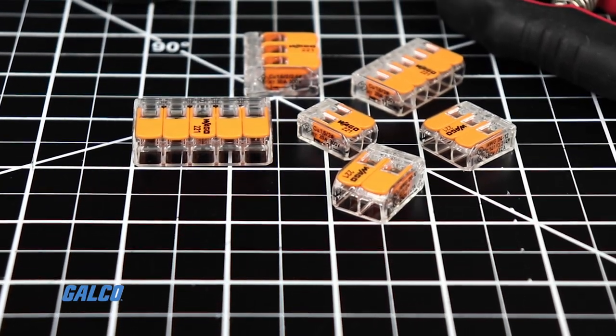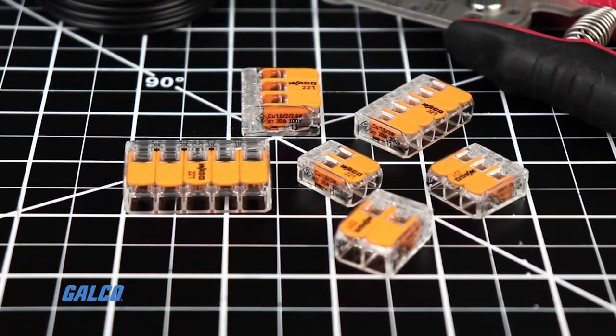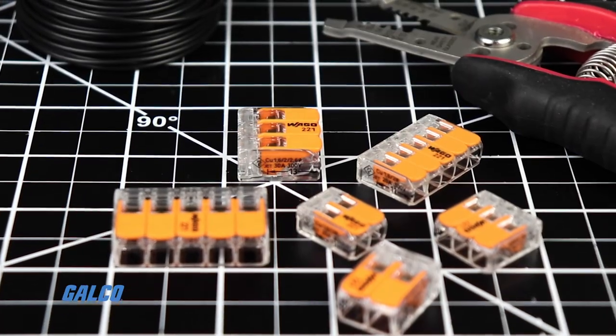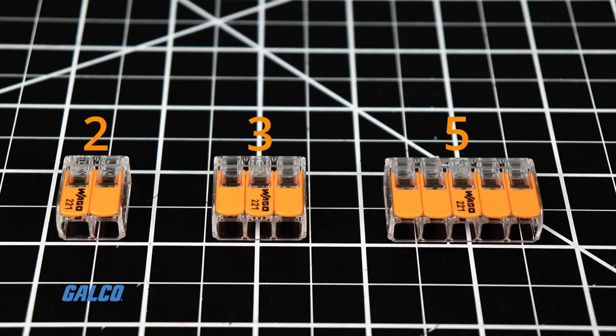Wago's 2-2-1 Series Compact Splicing Connectors are designed to easily terminate conductors in two, three, and five wire configurations.